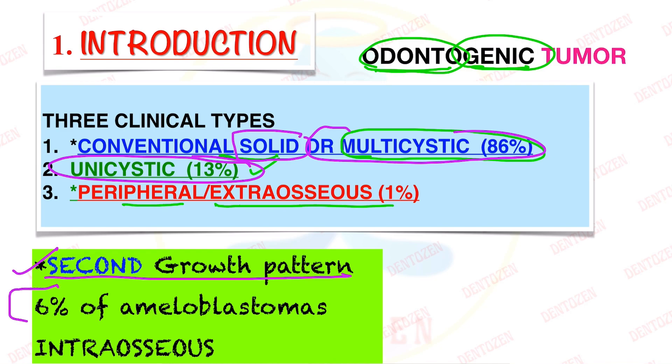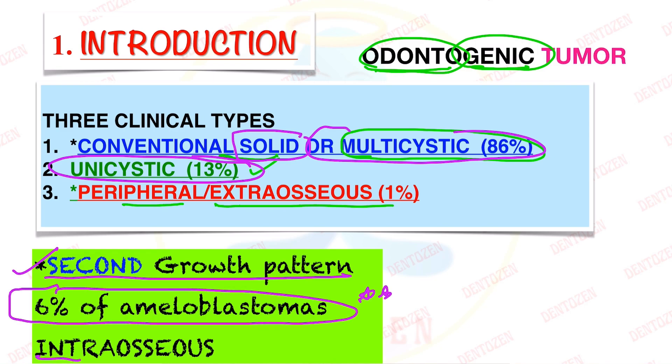According to one classification, Unicystic Ameloblastomas constitute about 6% of all Ameloblastomas. They are intraosseous — intra means inside, osseous means bones — so like solid Ameloblastoma, they are found inside the bone.